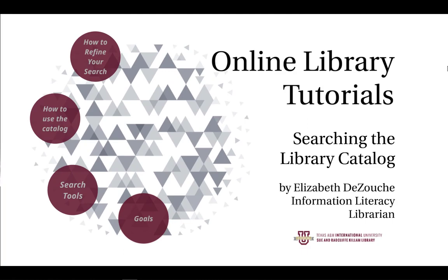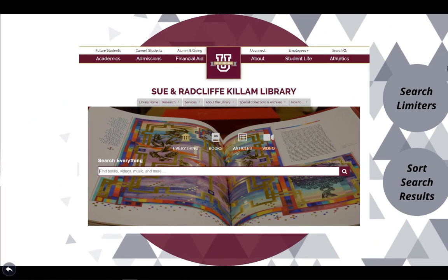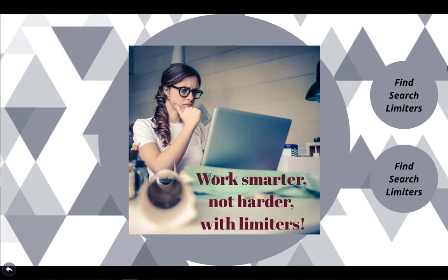How to use the library catalog. You may look at our catalog and think you just type your search terms and hit enter. You would be right in that you would get a huge list of search results, but there's a way to make the catalog work smarter so you don't have to work harder. There are tools built into library catalogs that allow you to specify your search results. These tools are called search limiters. Search limiters allow you to refine your search results without changing your search terms. For example, there are limiters that allow you to specify the date range of publication, the format of the information, the peer review status, as well as many others.